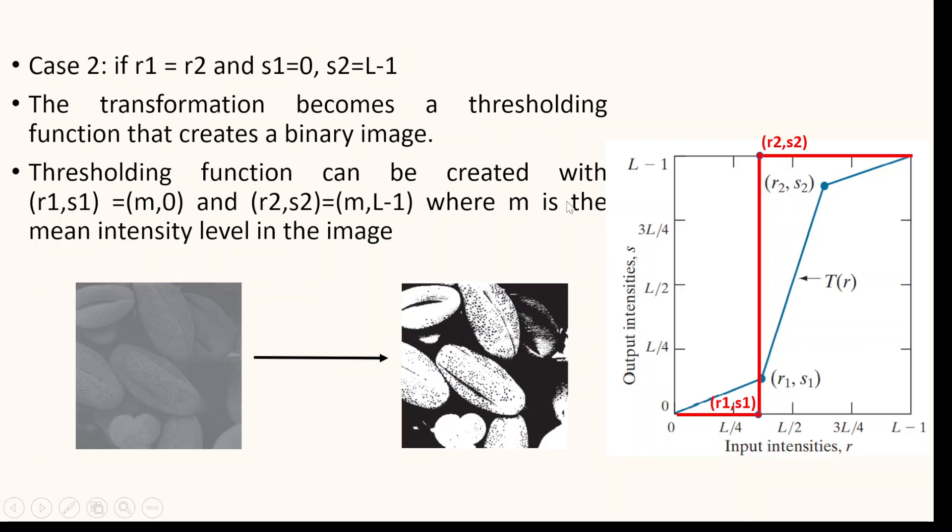Thresholding function can be created with R1, S1 equal to M, 0 and R2, S2 equal to M, L minus 1 where M is the mean intensity level in the image. Applying this case where R1 equal to R2 and S1 equal to 0, S2 equal to L minus 1, from the input image you get a binary image.